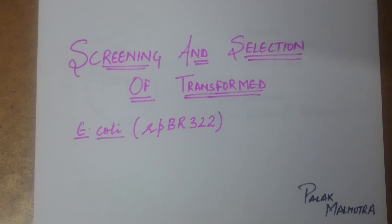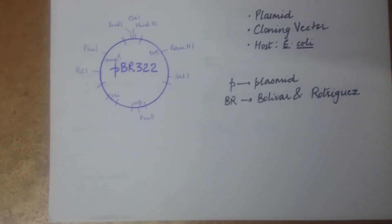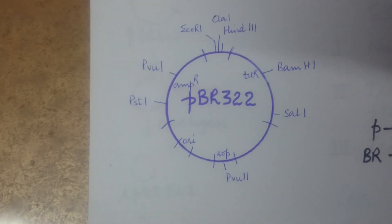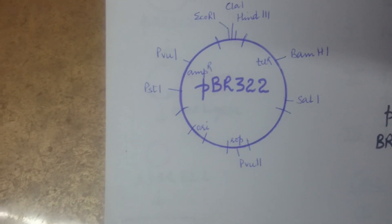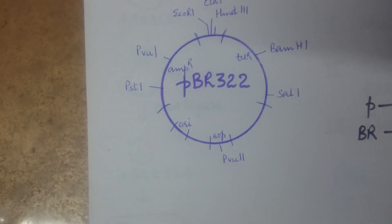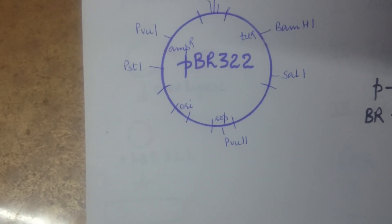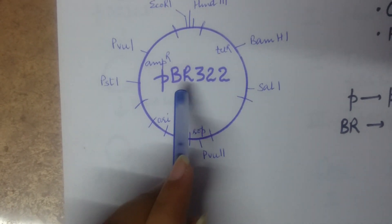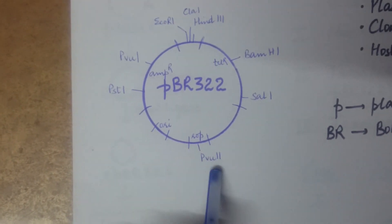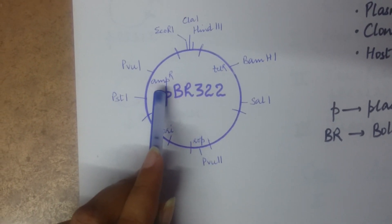Welcome. Today's topic is screening and selection of transformed E. coli, which will be transformed by recombinant pBR322. This is the diagrammatic representation of pBR322, which is a plasmid — a circular DNA molecule present extra-chromosomally in bacteria as well as certain yeasts. Its host is E. coli. 'P' stands for plasmid, 'B' and 'R' stand for Bolivar and Rodriquez, the two scientists who artificially synthesized pBR322. It has various restriction digestion sites and two selectable markers: an ampicillin resistance gene and a tetracycline resistance gene.